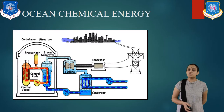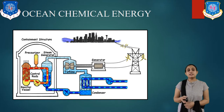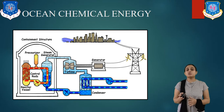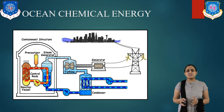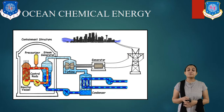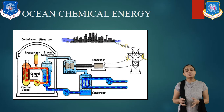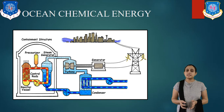Let us see ocean chemical energy. It refers to the chemical energy in ocean water. Ocean water contains hydrogen, oxygen, sodium, and other elements, and chemical reactions take place between them. This chemical energy can be converted into electrical energy by using fuel cells.